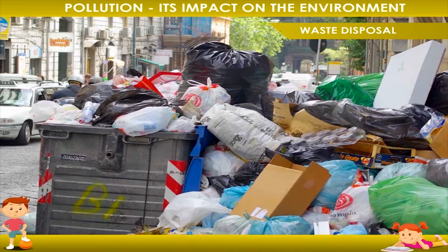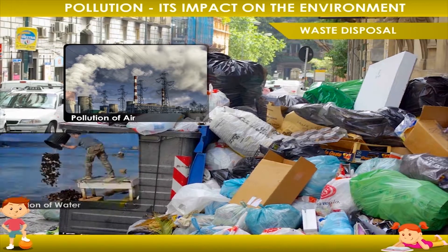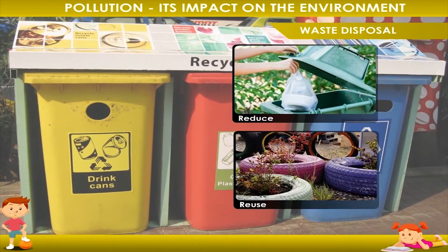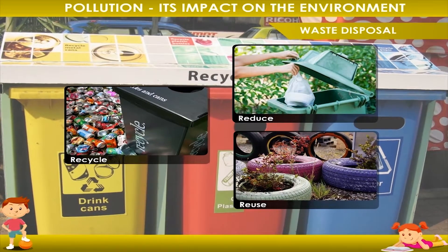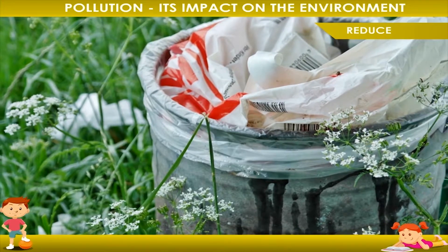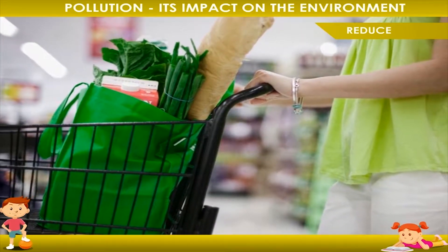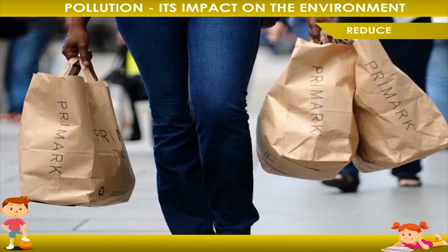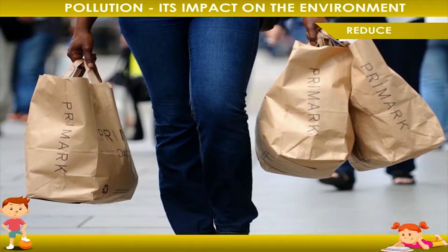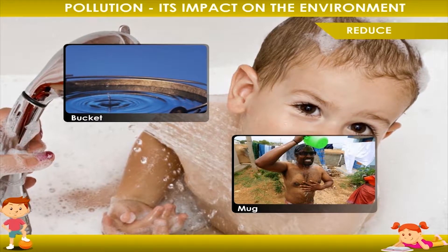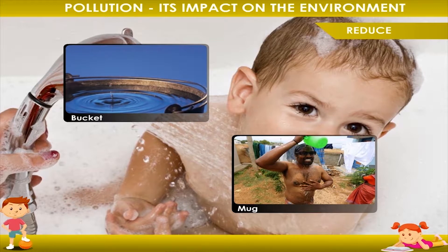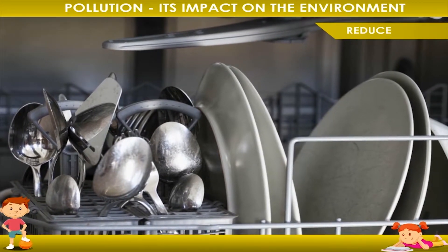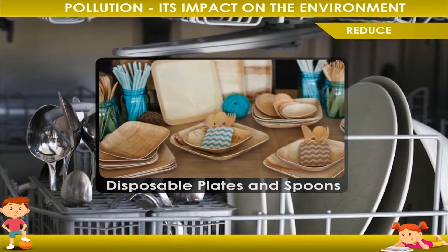Improper waste disposal causes pollution of air, water, and land. We should follow the three Rs of environmental protection — Reduce, Reuse, and Recycle — to conserve the Earth's natural resources. Reduce: 1. We should only buy substances we need. 2. We should use cloth bags to bring food and other products from the market to reduce the use of paper bags. 3. We should use a bucket and mug to bathe instead of a shower to reduce wastage of water. 4. We should use plates and spoons made of ceramic and metal instead of disposable ones to reduce land pollution.